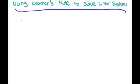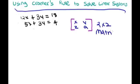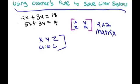Let's start with the original equations again: 12x plus 3y equals 18, and 5x plus 3y equals 4. We're going to use something called a matrix. A matrix looks like this — this is a two-by-two matrix. A matrix is just a way of organizing values inside brackets.